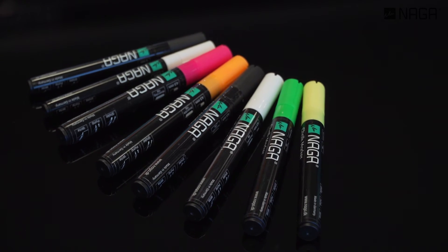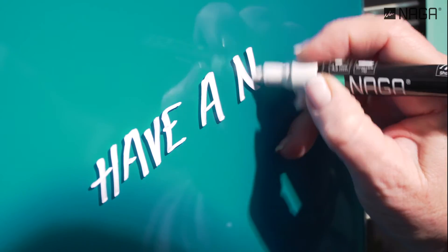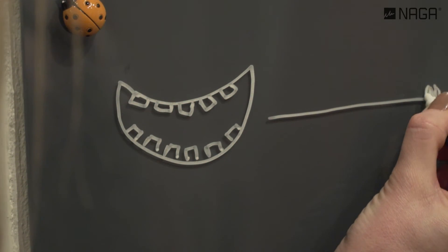Naga chalk marker is a quality marker that works on all smooth surfaces. In addition to glass boards, you can also write on windows and mirrors, for example.